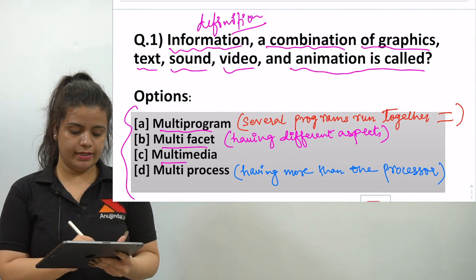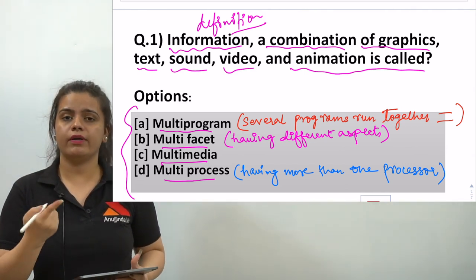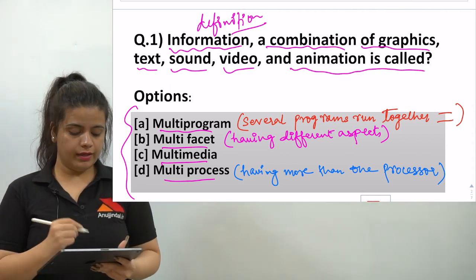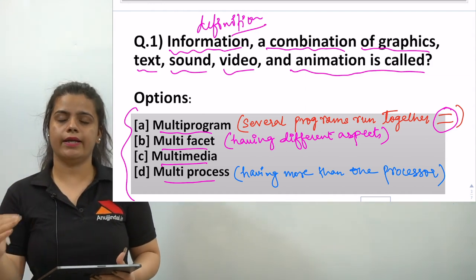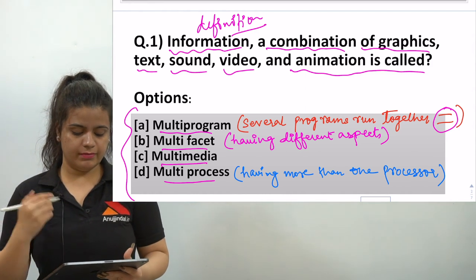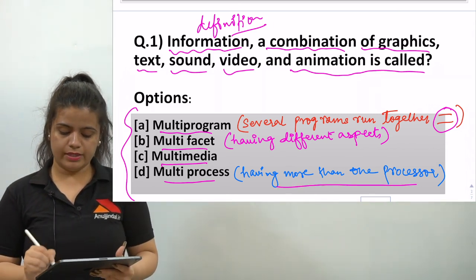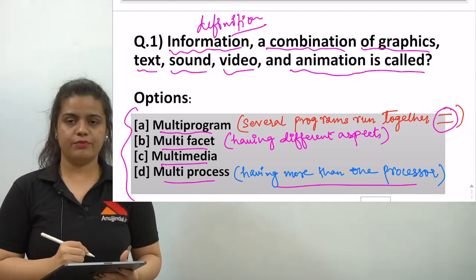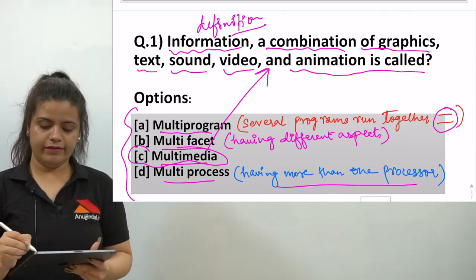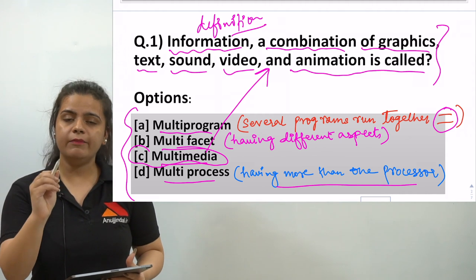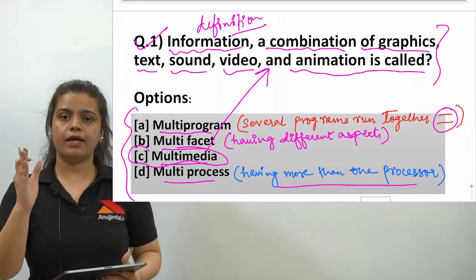You have to learn all the important definitions related to computers. Multi-program means several programs running together in parallel. Multi-facet means having different aspects. Multi-processing means having more than one processor. Multimedia is the one defined as information — a combination of graphics, text, sound, video, and animations. So the answer here is multimedia.